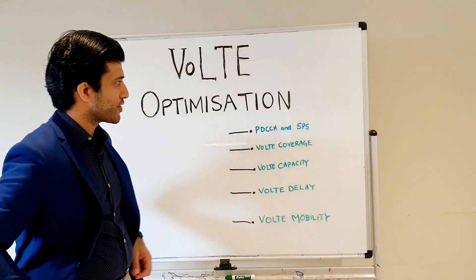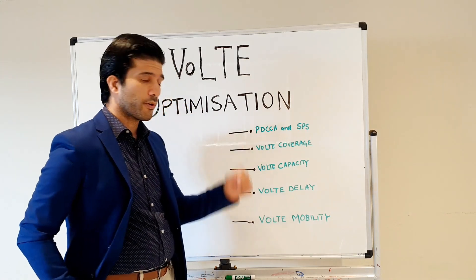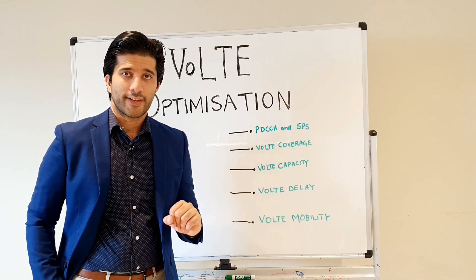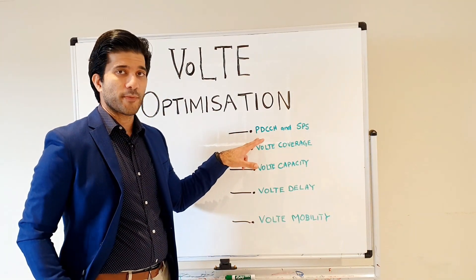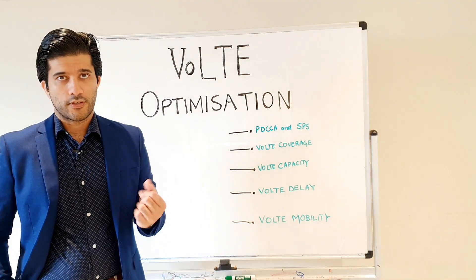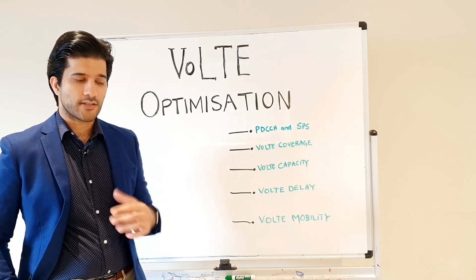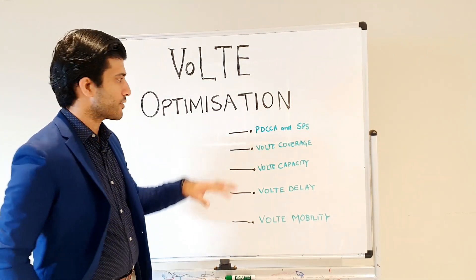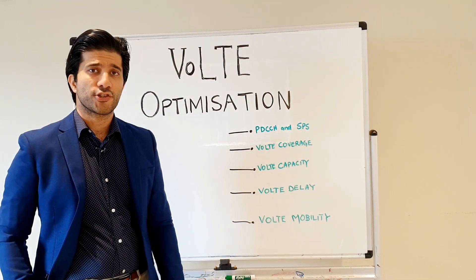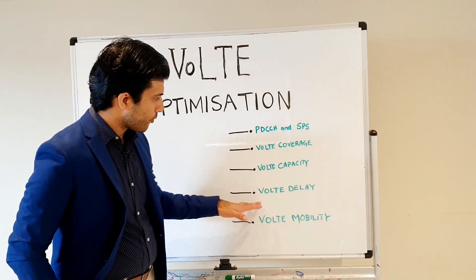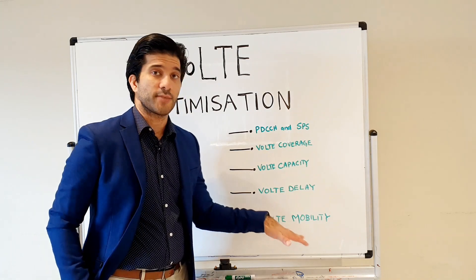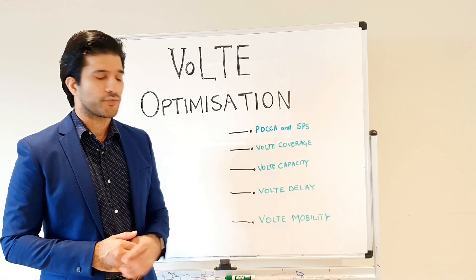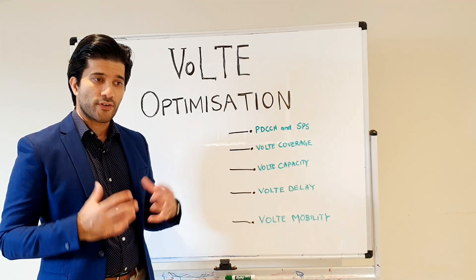Let's see what topics we are going to discuss in Voice over LTE optimization. The first topic is PDCCH and SPS — physical downlink control channel and semi-persistent scheduling. In Voice over LTE there is a problem with PDCCH capacity because of guaranteed bit rate services and scheduled grants causing overload. Then we have VoLTE coverage, VoLTE delay, and VoLTE mobility. This video will give a short summary of all of these and the methods used to optimize the network effectively.